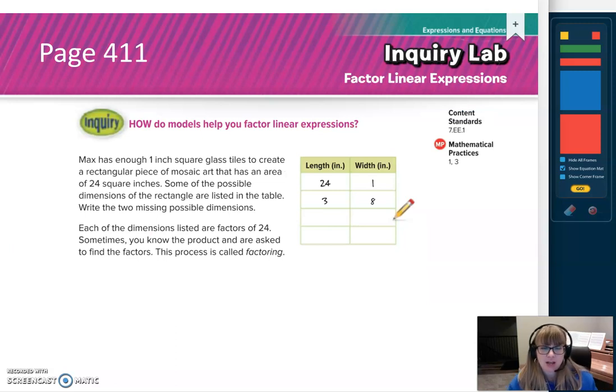Now we're ready to start on page 411 from our inquiry lab. It says Max has enough one-inch square glass tiles to create a rectangular piece of mosaic art that has an area of 24 square inches. I'm sure you guys have seen those kinds of things where there's a bunch of different tiles and each person paints just one little tile, but when they are all put together, you can see this beautiful image. He just has 24 separate tiles. So what are some different dimensions? What are some different lengths and widths that he could get using those 24 tiles? You can see these ones are already done for you.